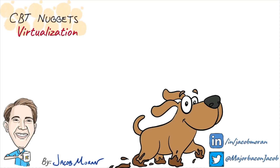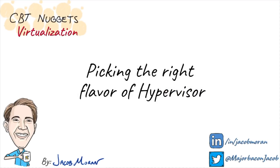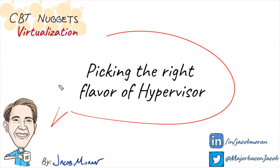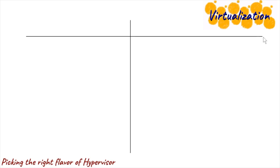In virtualization, we have something that's nearly as important as picking the right breed of dog, and that is picking the right flavor of hypervisor for our server or desktop virtualization. The good news is that our decision tree for choosing a hypervisor is going to be pretty straightforward because there's really only two types to worry about.